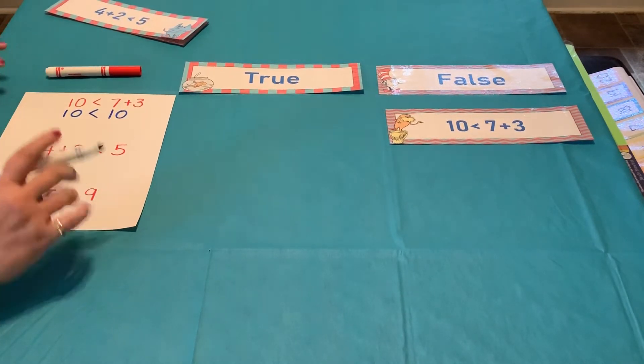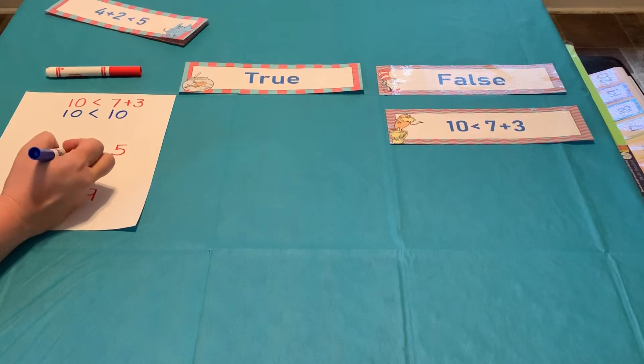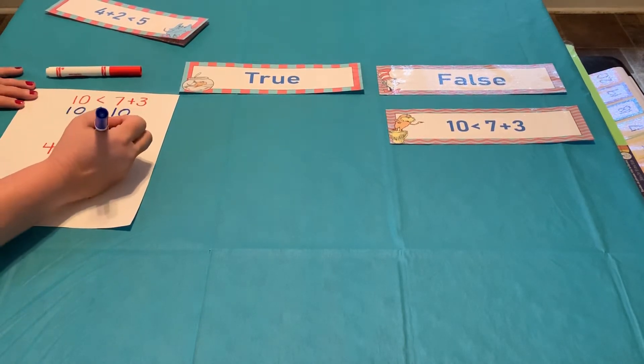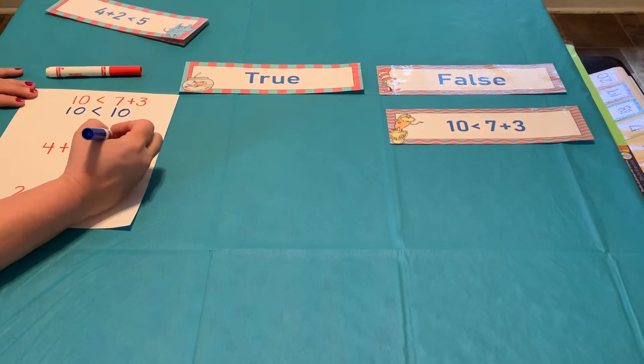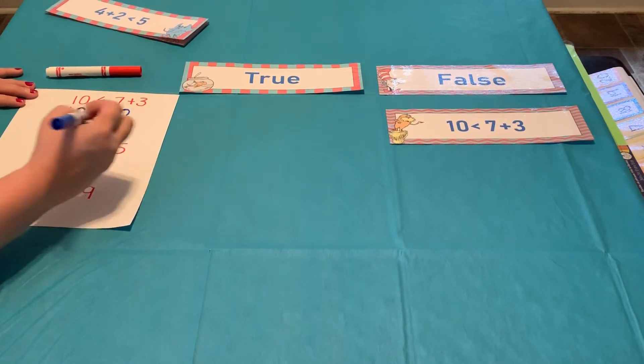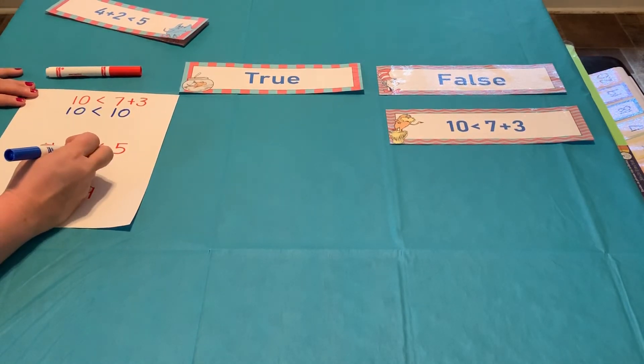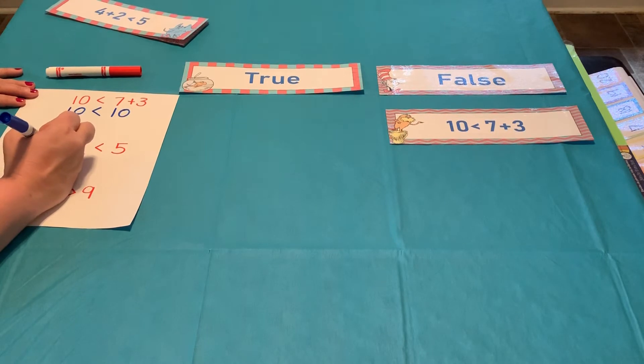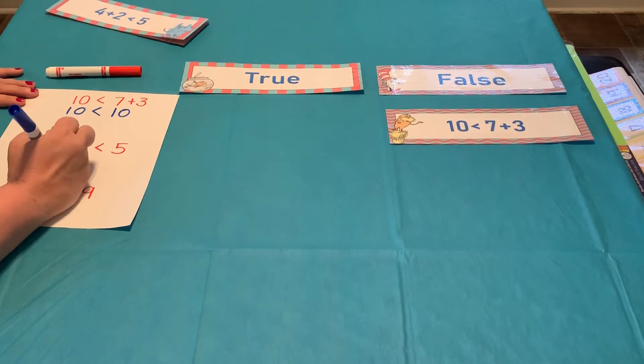All right, let's look at this one, scholars. 4 plus 2. 4 plus 2 is less than 5. All right, let's take that 4 plus 2. I can think in my head. 5, 6. 4 plus 2 is 6.